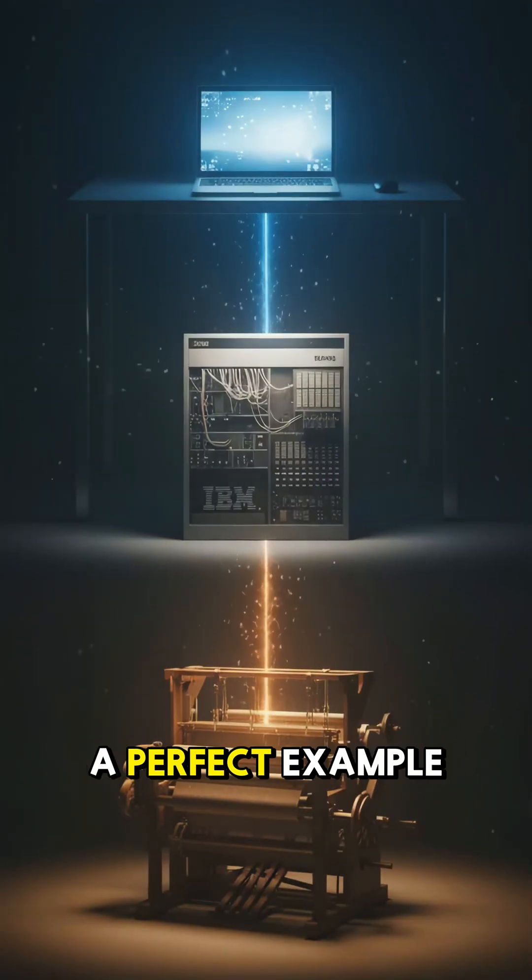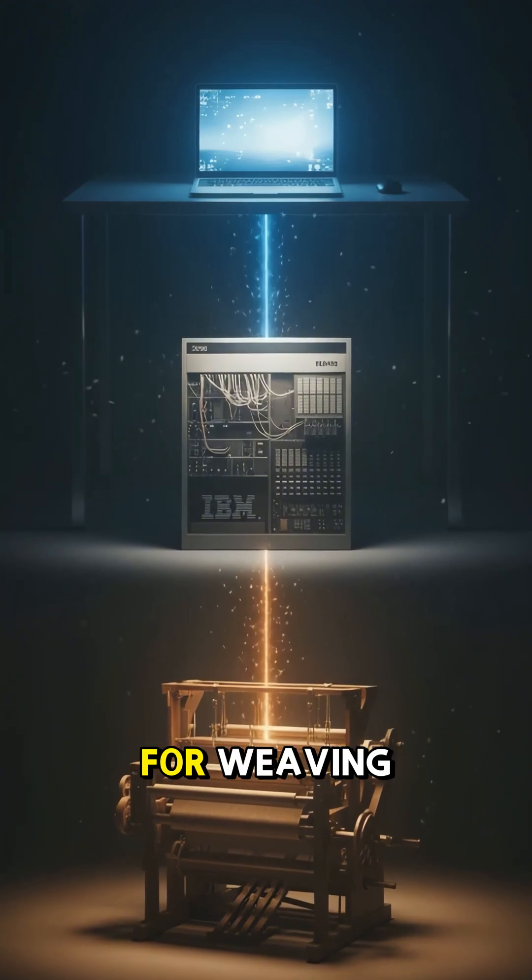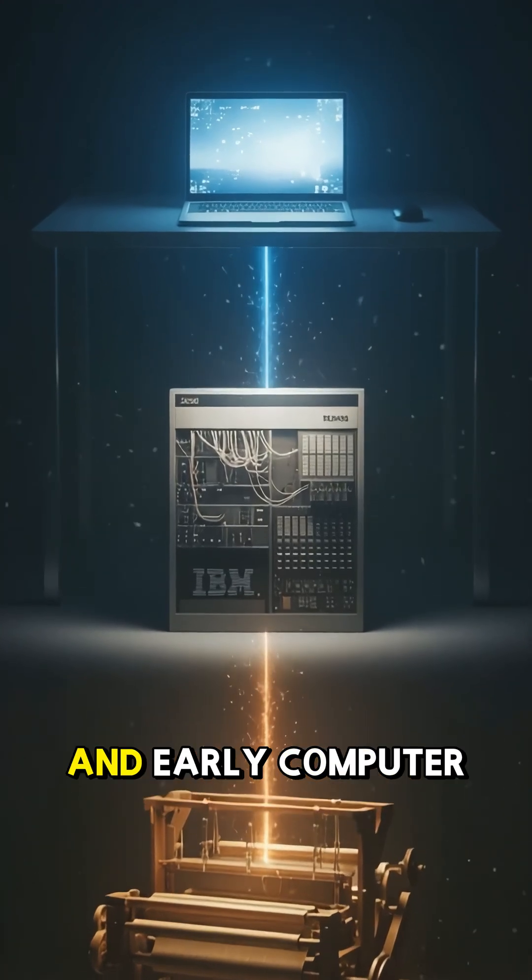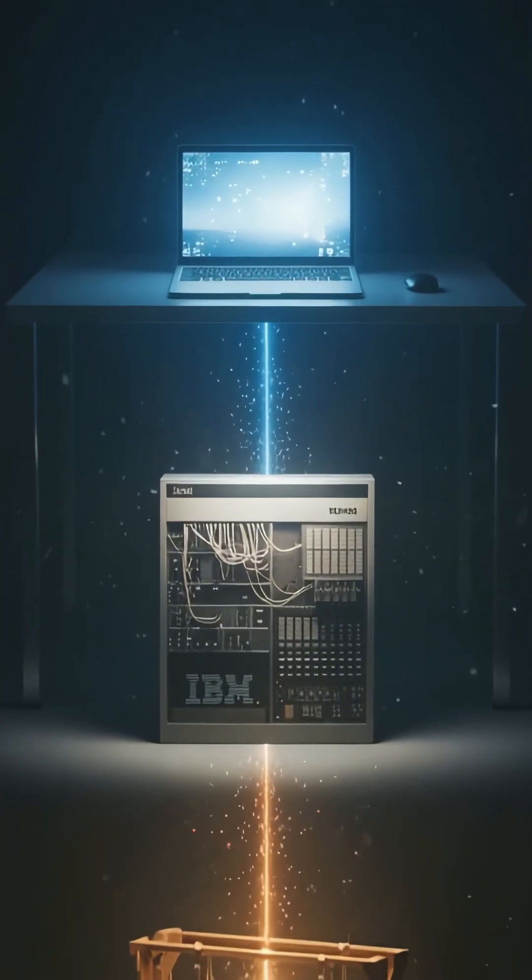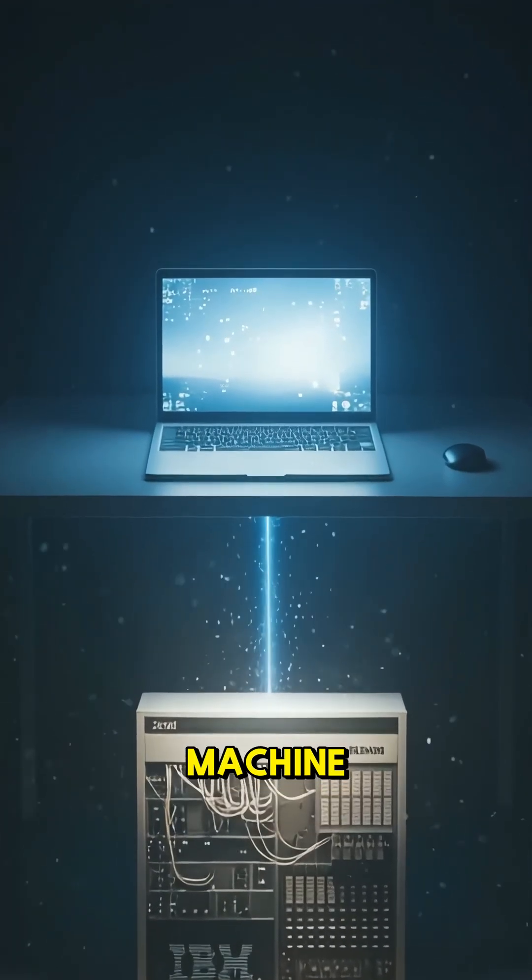Jacquard's loom is the perfect example of how old tech can shape the future. A machine built for weaving turned into the blueprint for programming, binary logic, automation, and early computer memory. You could argue that this loom was the first true information processing machine.